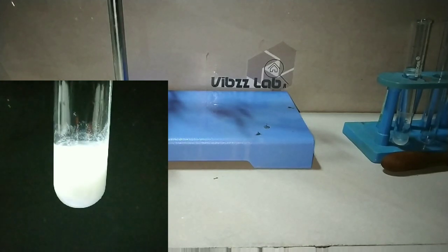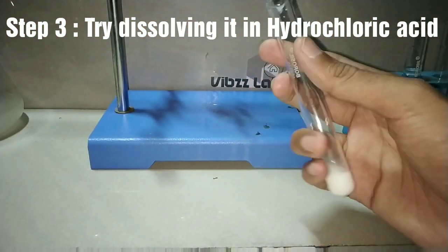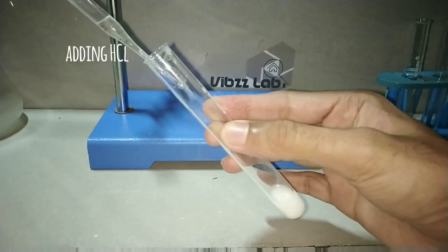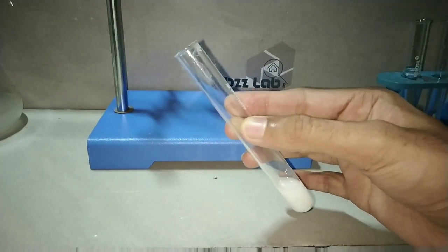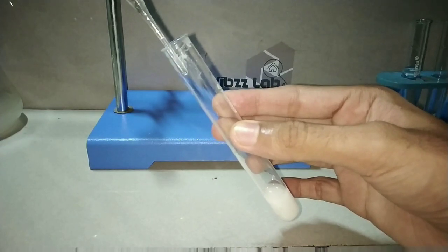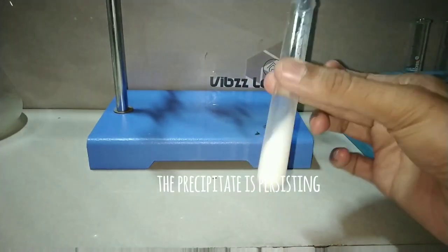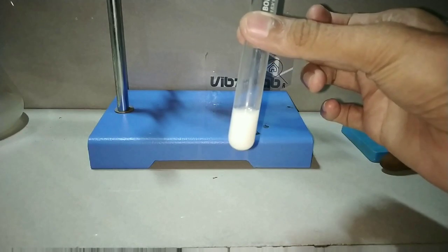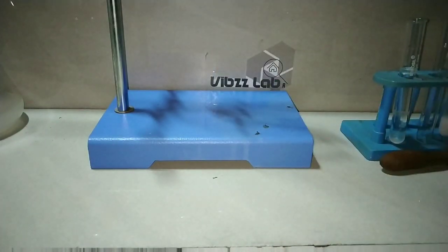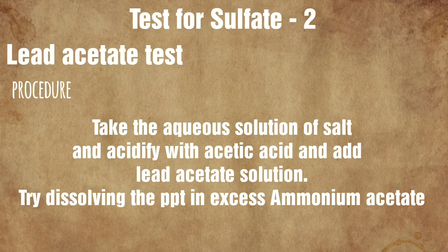Now, about the white precipitate — there are many substances that give a white precipitate, including carbonates. So in order to rule out carbonates, we will now add hydrochloric acid. Here I have taken the precipitate and I am adding hydrochloric acid. You can see that even after adding hydrochloric acid, the precipitate is persisting — it didn't dissolve. Sulfate salts react with barium chloride to produce the white insoluble precipitate of barium sulfate (BaSO₄), which does not dissolve in hydrochloric acid.